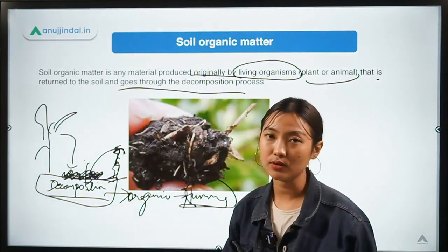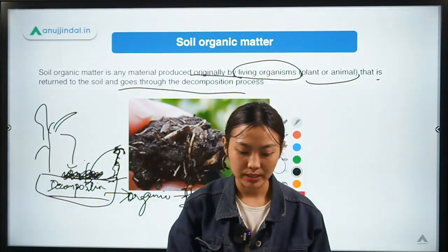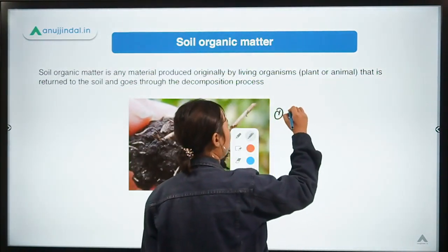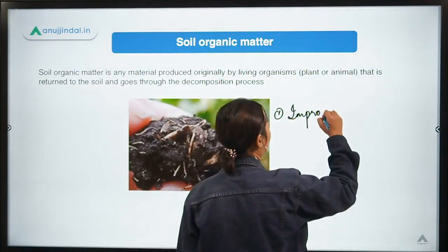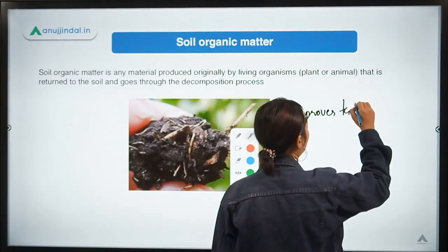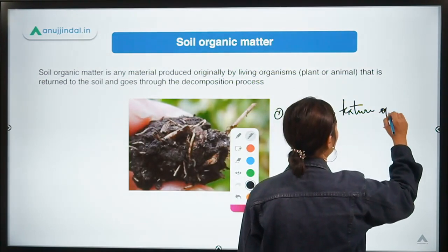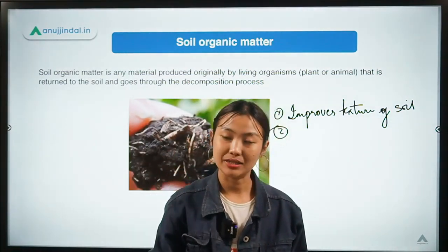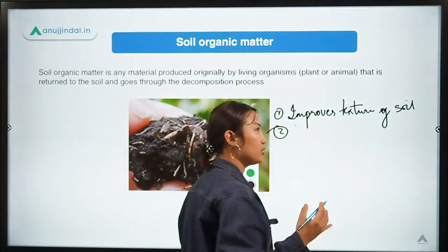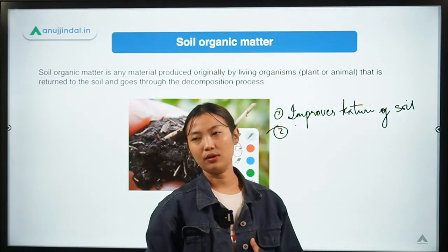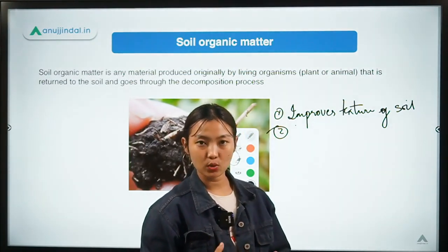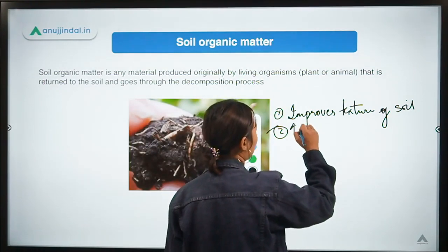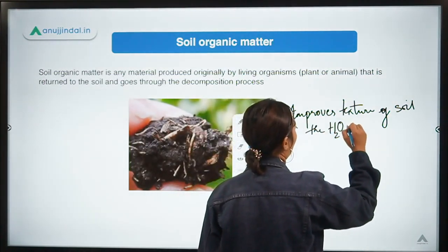The presence of organic matter affects normal crop growth in several ways. First, it improves the texture of the soil. Second, it also increases the water holding capacity of the soil — meaning the ability of the soil to hold water without it being leached off.